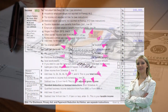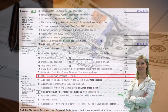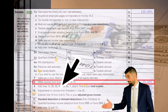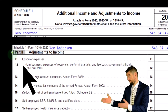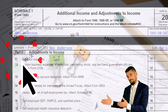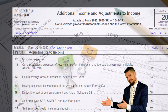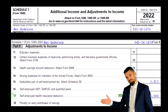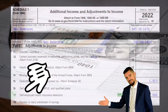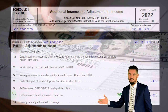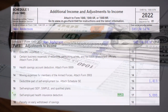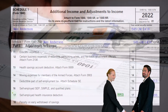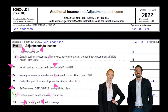On the first page of the tax form we're focused on line 8, other income from Schedule 1. Looking at Schedule 1 Part 2, we're focused on line 17, the self-employed health insurance deduction. This is often tied to a self-employed business, commonly a Schedule C.